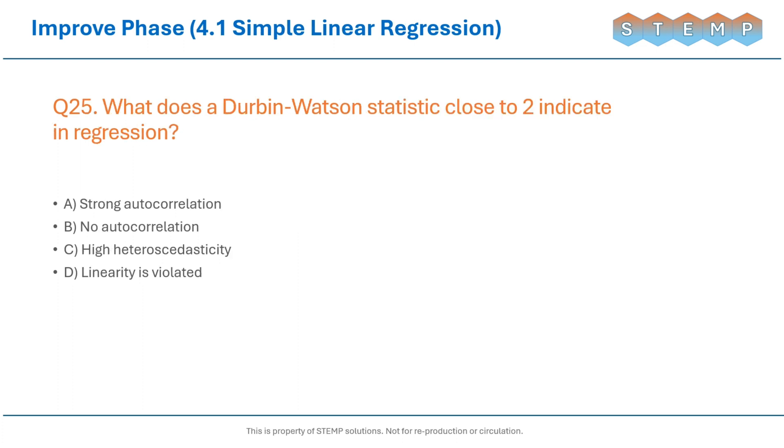What does a Durbin-Watson statistic close to 2 indicate in regression?